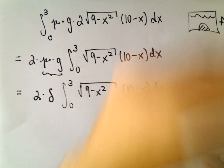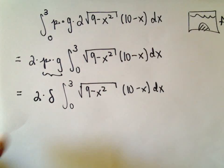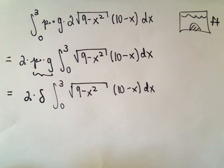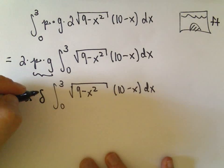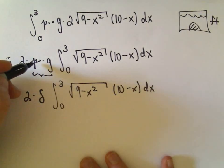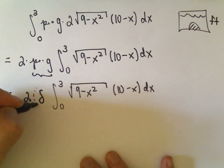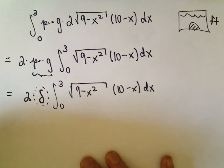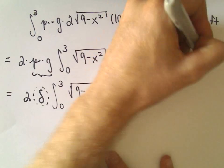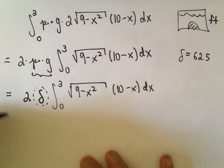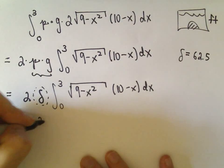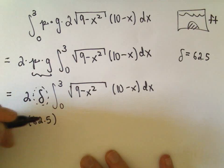Our original units are in feet, so that's going to come into it at the end. When units are in feet, we replace density times gravity — or equivalently that Greek symbol — with 62.5. So we can go ahead and plug that in to get rid of everything.